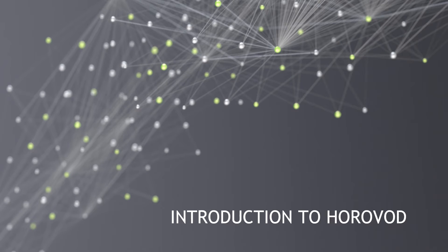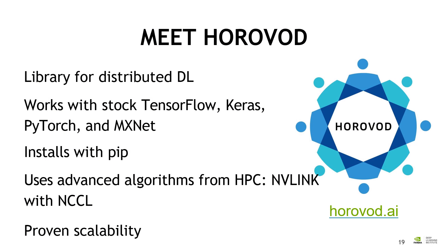Now let me give a short introduction to Horovod. Horovod is a library for distributed deep learning. You can freely download it. It works with TensorFlow, Keras, PyTorch, and MXNet, so there are a lot of examples available. It simply installs with pip. It uses all the good things we know from HPC — high performance computing. For example, it uses a message passing interface, MPI. MPI is behind the scenes in Horovod — Horovod is completely based on an MPI domain decomposition approach.